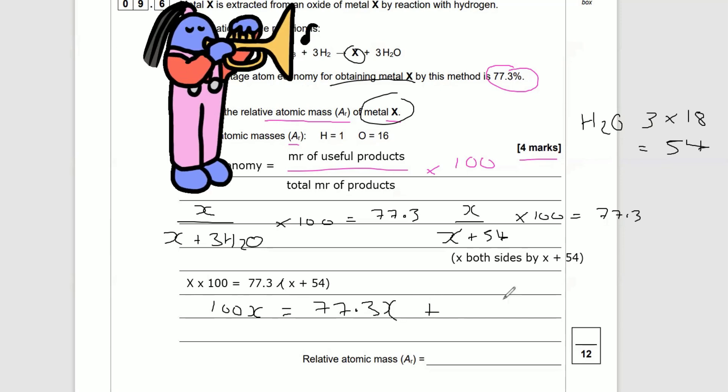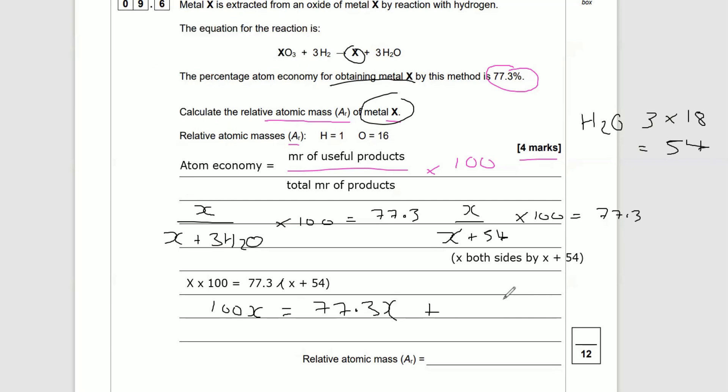That equals 4174.2. So we multiplied out those brackets. Now all I need to do is take 77.3X from both sides, and that is going to leave us with... oh my gosh... a bad cough because I got a cold.